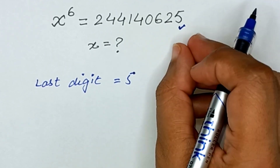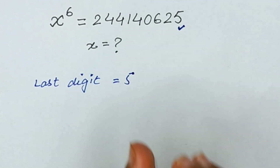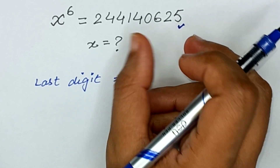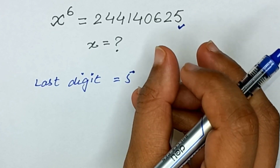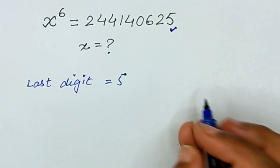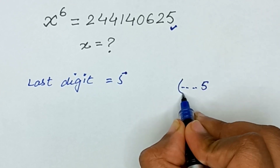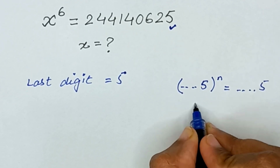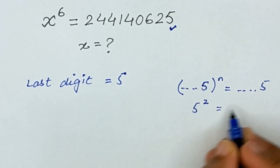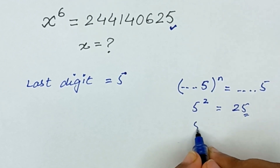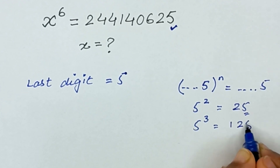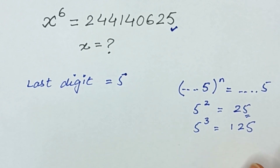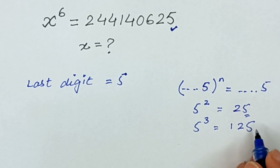Because if any integer has a last digit of 5, its powers also end in 5. For example, 5 raised to the power 2 is 25 — last digit is 5. 5 raised to the power 3 is 125 — last digit is 5. Similarly, 5 raised to the power 4 and 5 raised to the power 5 also give numbers with last digit 5. So the last digit of x must be 5.